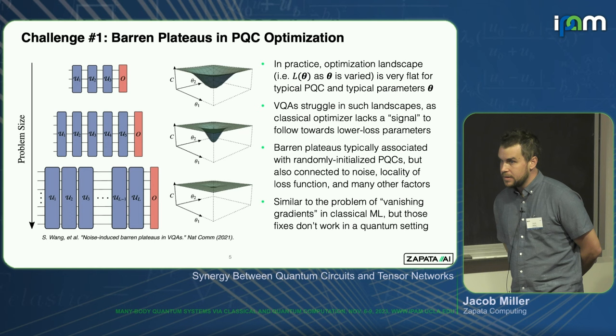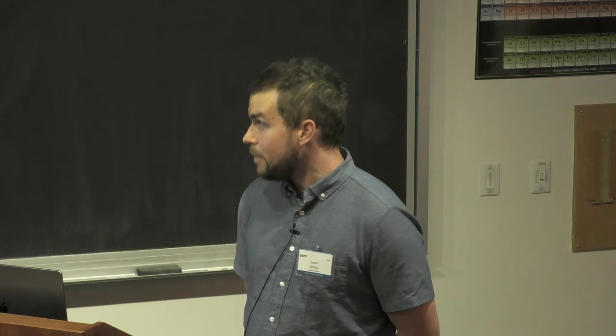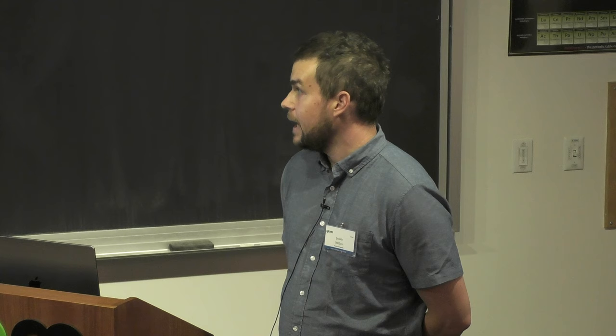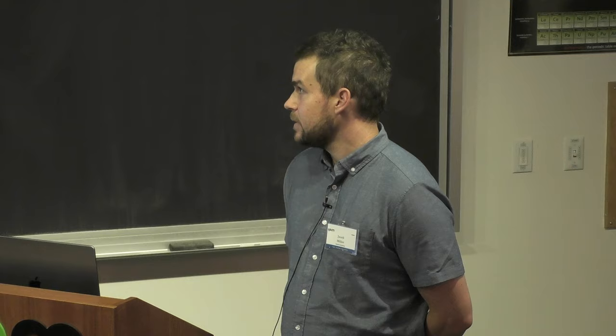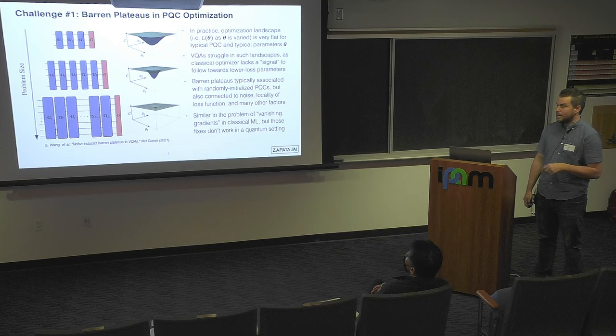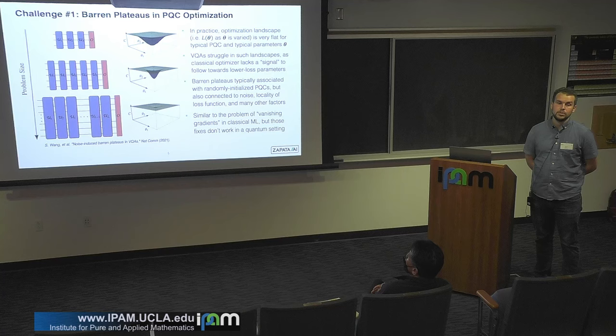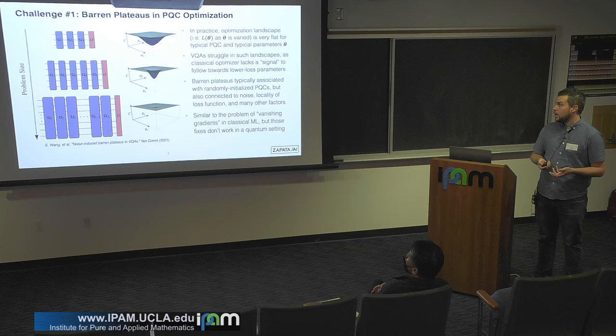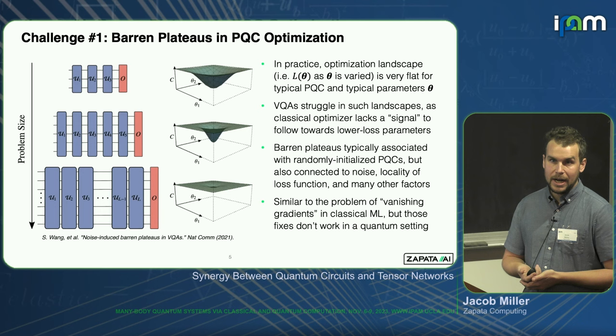Barren plateaus have a lot of different causes. They were originally demonstrated and proven for cases of randomly initialized parameterized quantum circuits. There's nice analytical work showing that on very mild assumptions about how you randomly initialize PQCs, you're guaranteed to get gradient signals that decay exponentially in the depth of the circuit and in the number of qubits. Random PQCs are therefore a bit frowned upon. But even when you don't randomly initialize your quantum circuits, you can also have barren plateaus that emerge connected to noise, the locality of the loss function, or many other things. It's one of the persistent problems with variational quantum algorithms.